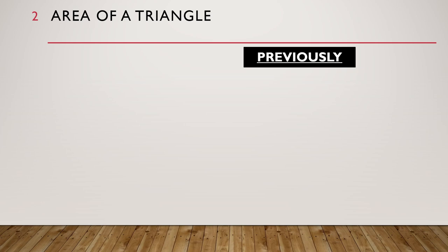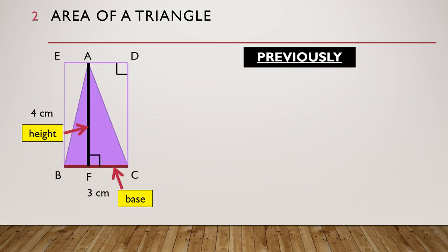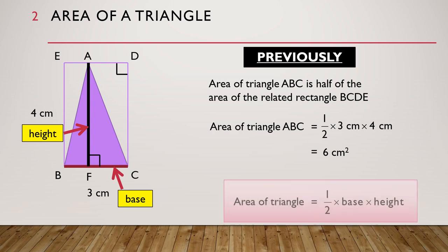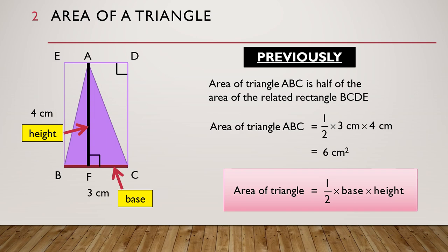Previously on area of a triangle, we saw triangle ABC and the base and height of the triangle. We noticed that the area of triangle ABC is half of the area of the related rectangle BCDE. We found the area of triangle ABC to be equal to half times 3 centimeters times 4 centimeters, which is equal to 6 square centimeters. Using the base and the height, we discovered that the area of the triangle is equal to half times the base times the height of the triangle.